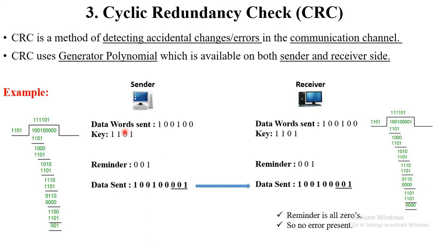On the sender side, they perform the generator polynomial method. They divide 1 1 0 1 into the particular message 1 0 0 1 0 0. After division, the remainder is 0 0 1. The sender then attaches this remainder at the end of the message, making it 1 0 0 1 0 0 0 0 1, and this combined message is sent to the receiver.